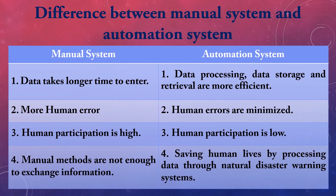Now we will see the differences between the manual system and the automated system. In the manual system, data processing and creation of information is done manually. The drawbacks are: it takes more time in entering and organizing data, human errors in data processing are high, which leads to inaccurate information, and manual methods are inefficient in sharing information, making it difficult to provide quality service to the customer.